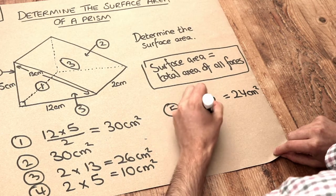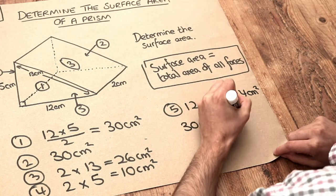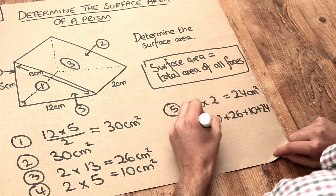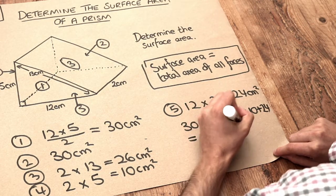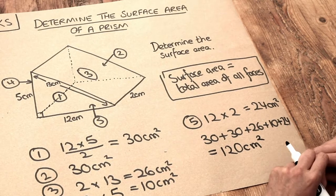And now we just have to add those all up, so it's 30 plus 30 plus 26 plus 10 plus 24 and that is 120 centimeters squared. So that is the total surface area.